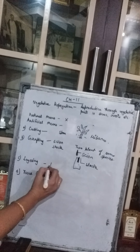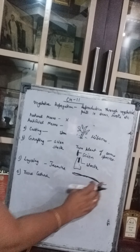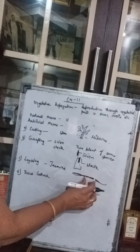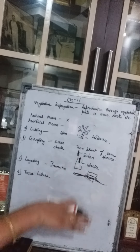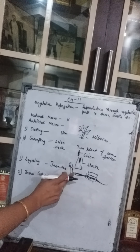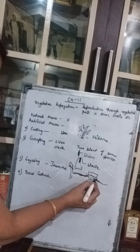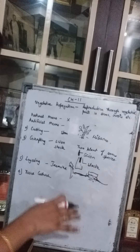The third method is layering, mainly done in plants like jasmine that have long, slender stems. A part of the growing stem — without cutting it from the parent plant — is sowed into the soil. A brick is placed on it so it stays submerged in the soil. Water is regularly added to it.